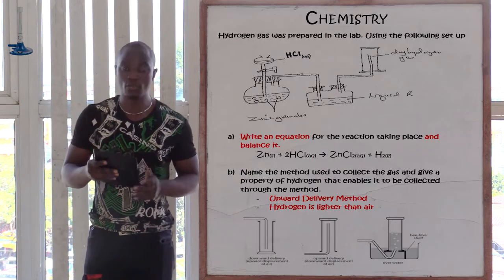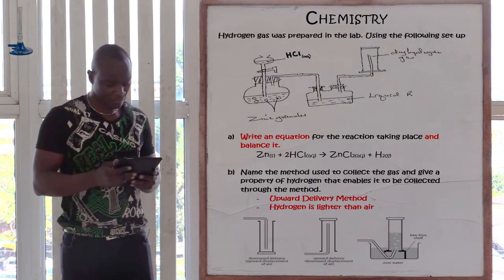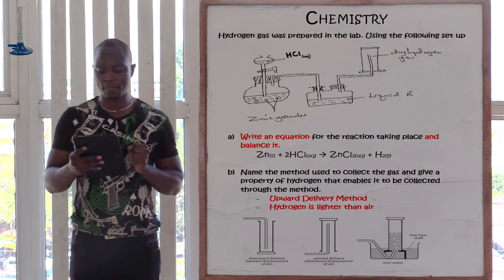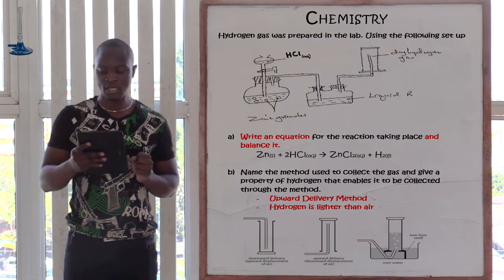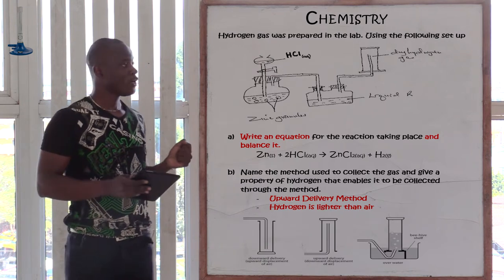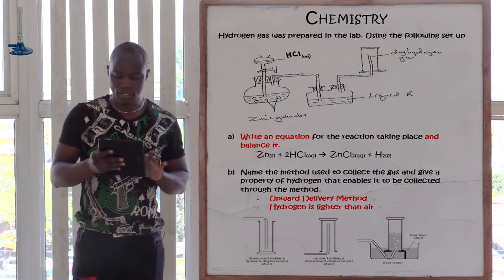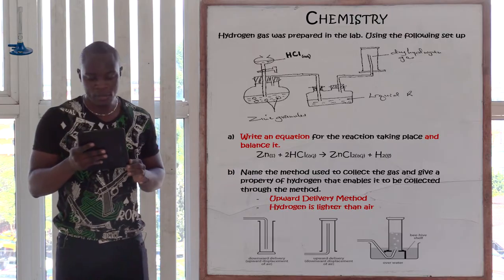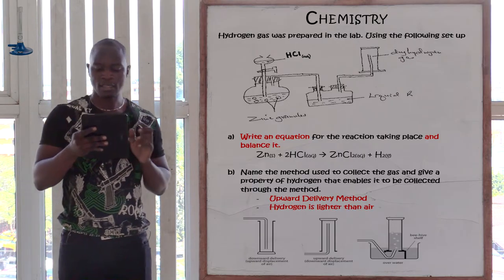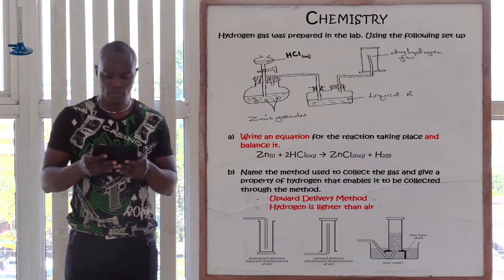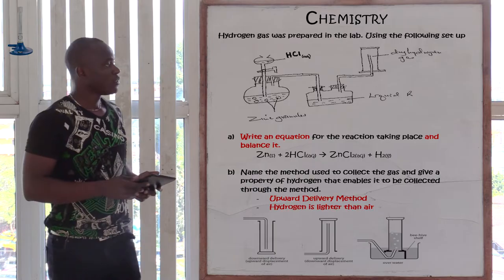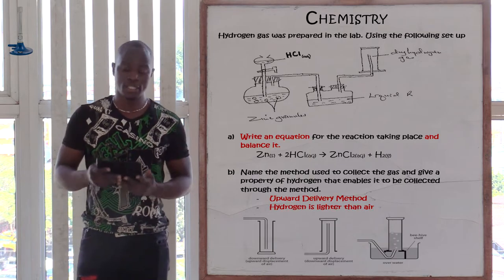Let's go to question number five. Question five is asking that hydrogen gas was prepared in the laboratory using the following setup. We are reacting dilute hydrochloric acid plus zinc granules, and then the gas is passing through liquid air, and we are obtaining dry hydrogen gas.